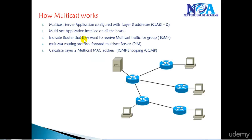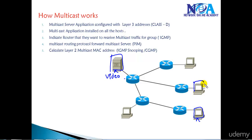The first thing is — let's say there is a server here which is sending video streaming, or a video server sending multicast traffic to some receivers. I have receivers on this side. There are two different receivers who want to receive the multicast traffic on this network as well as on this network, whereas the other host is not a receiver.